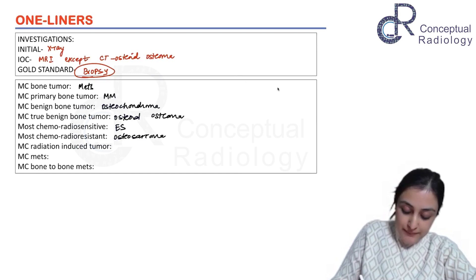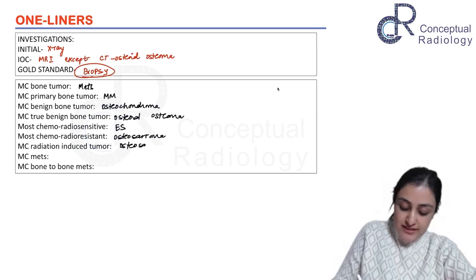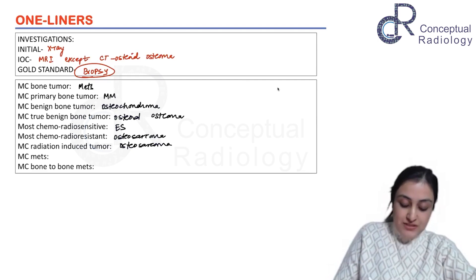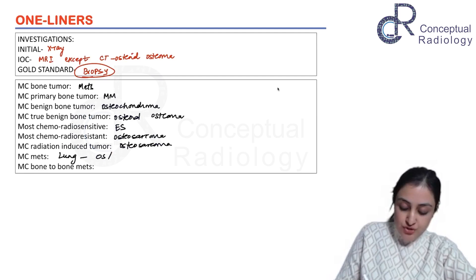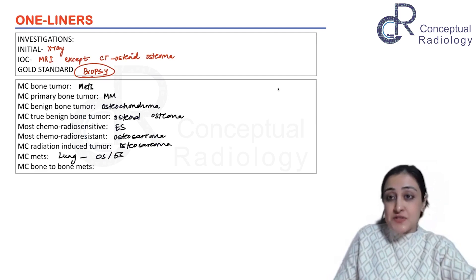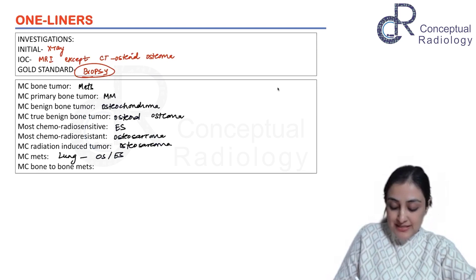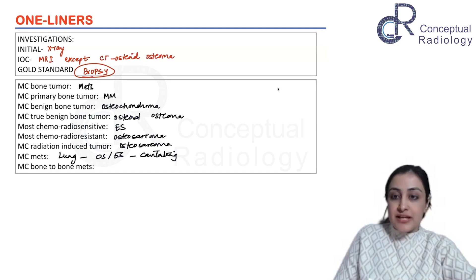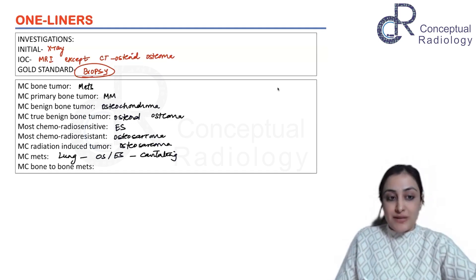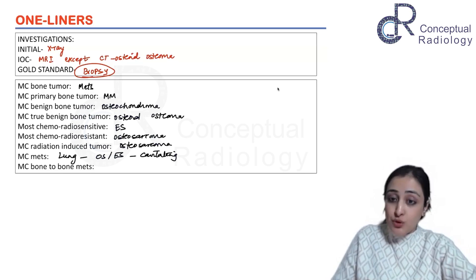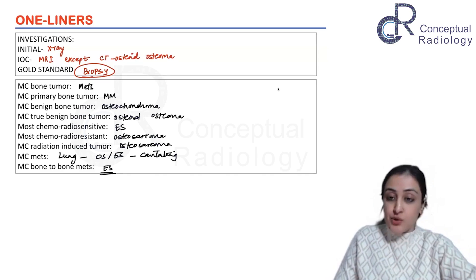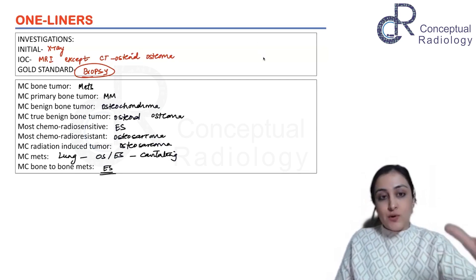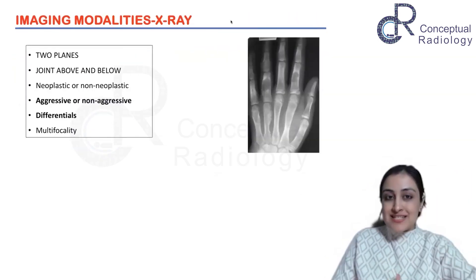The most chemoradiosensitive tumor is Ewing sarcoma, whereas the most chemoradioresistant is osteosarcoma. Radiation-induced tumor is again osteosarcoma, which has radiotherapy as a risk factor. The most common metastases are to the lungs, from two tumors: osteosarcoma and Ewing sarcoma — these can present as cavitating metastases. Bone-to-bone metastasis is far more common in Ewing sarcoma.